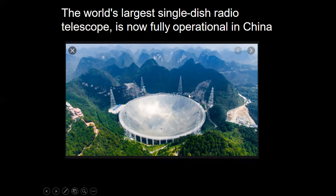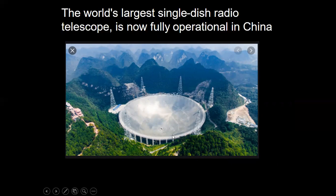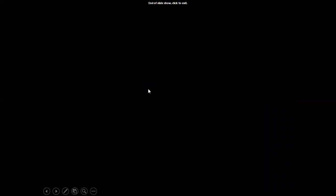The world's largest single-dish radio telescope is now in China. It is really large, and an important feature is that they can change its diameter depending on what they are observing. It is a remarkable large single-dish radio telescope.